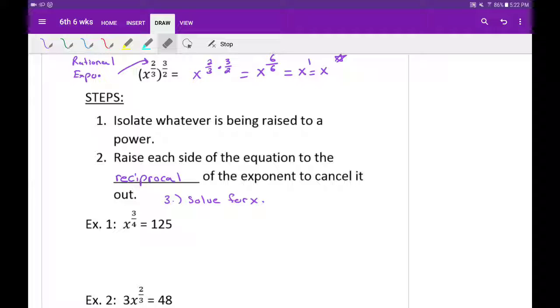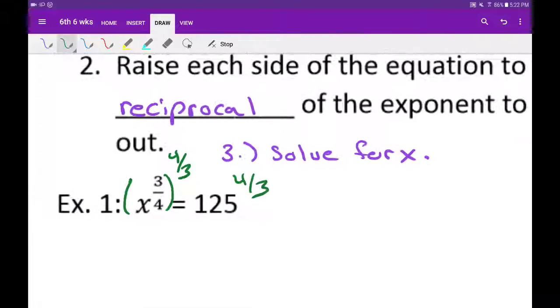Alright, so example one. So what I want to isolate right now is the x to the 3 fourths, which is already isolated. So now all I've got to do is take it to reciprocal power. We flip the fraction and then take it to another power. So we raise it to the 4 thirds power. So we've got to raise the right side also to the 4 thirds power.